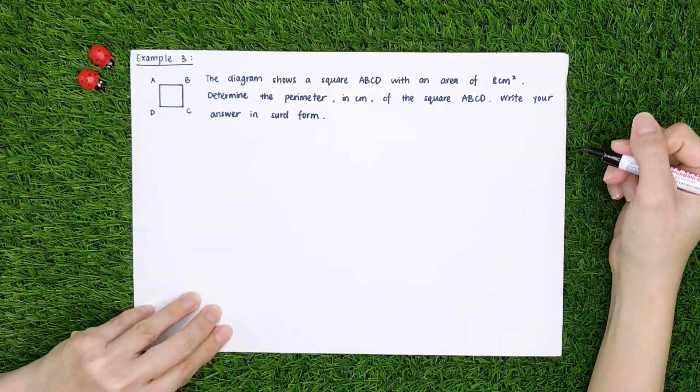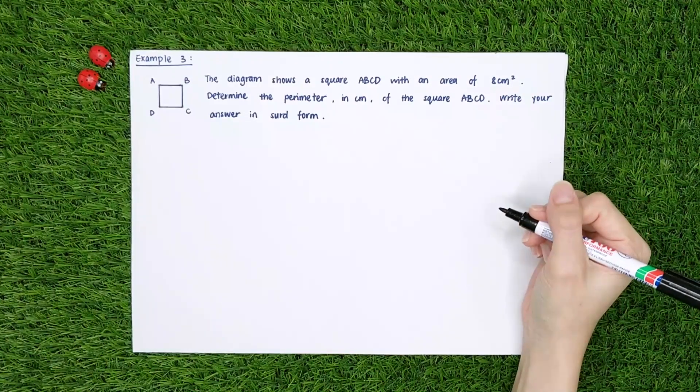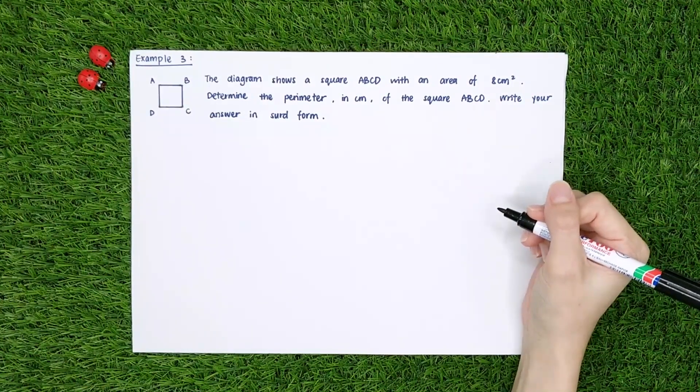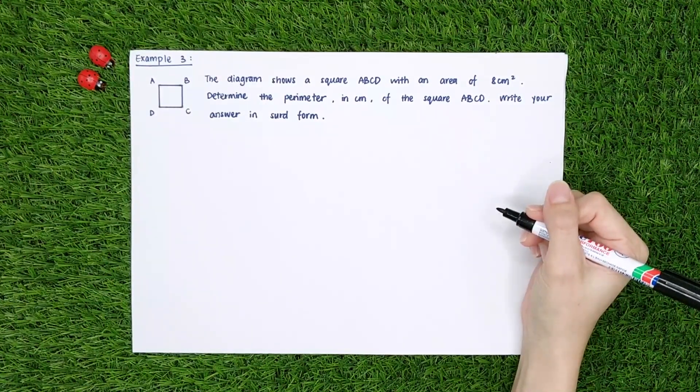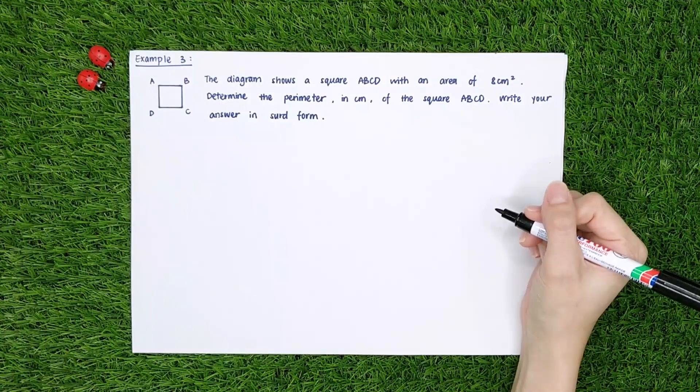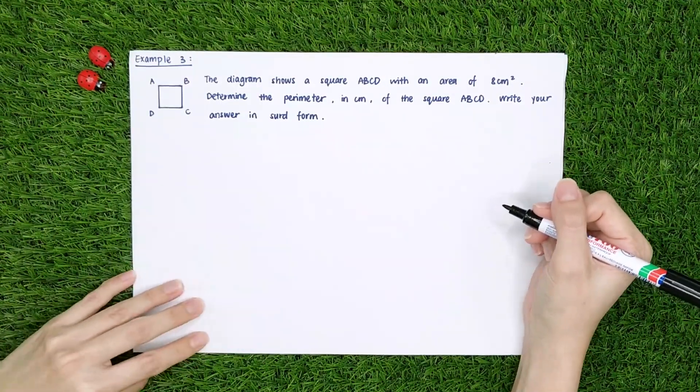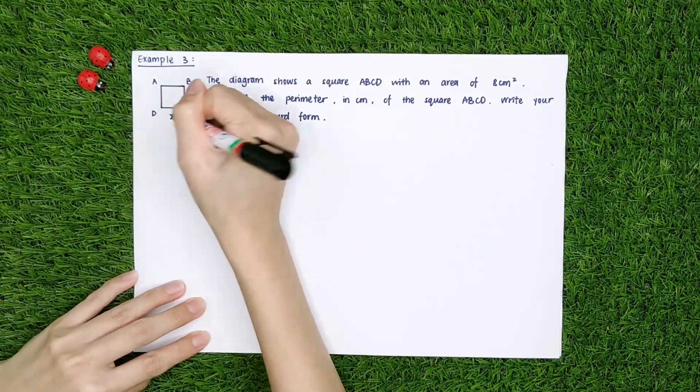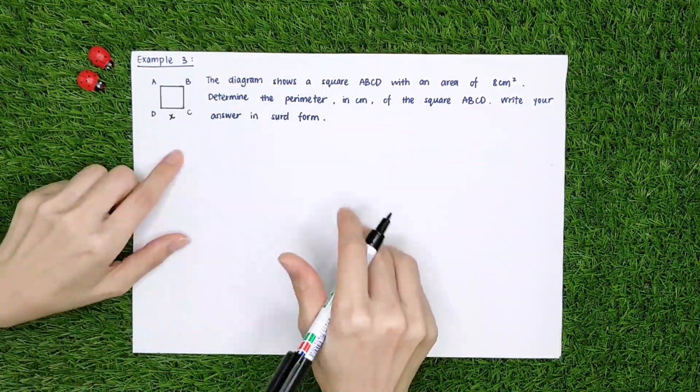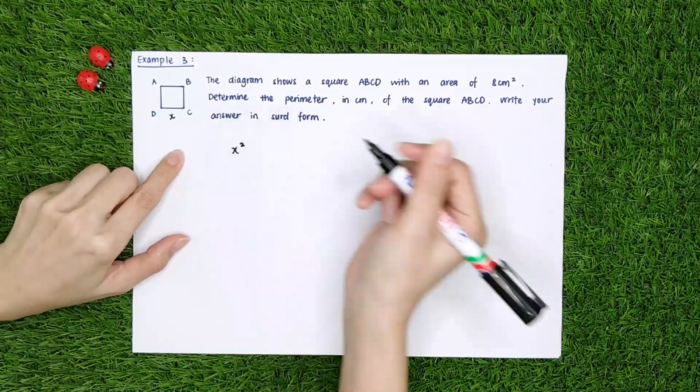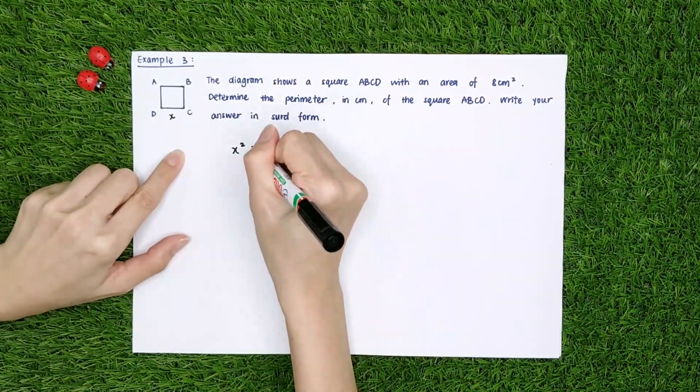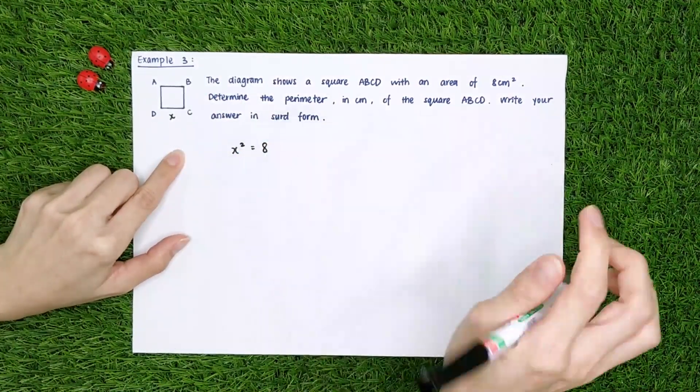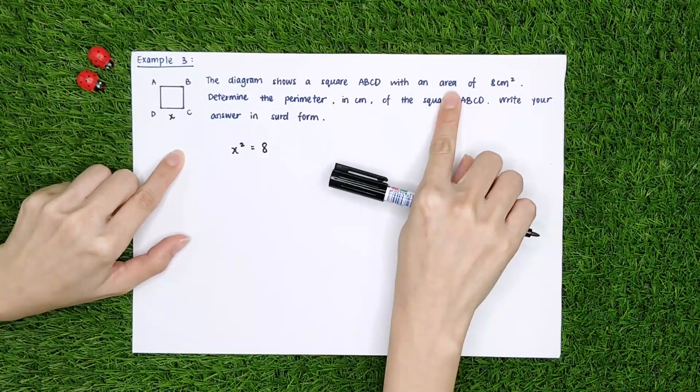Example 3, the diagram shows a square ABCD with an area of 8 cm squared. Determine the perimeter in cm of the square ABCD. Write your answer in surd form. Okay, let one of the length of the side be x. Which means x power of 2, x times x is equals to 8. Okay, because this is the area.